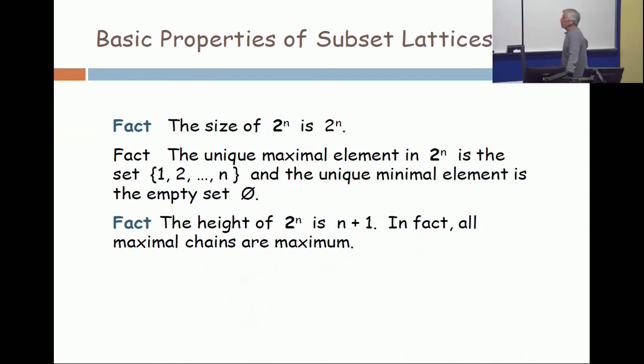The unique maximal element in two to the n is the set one-two up to n, or in bit-string notation, the maximal element is the all-one string. And unique minimal element is the empty set, or in bit-string notation, the vector of all zeros.